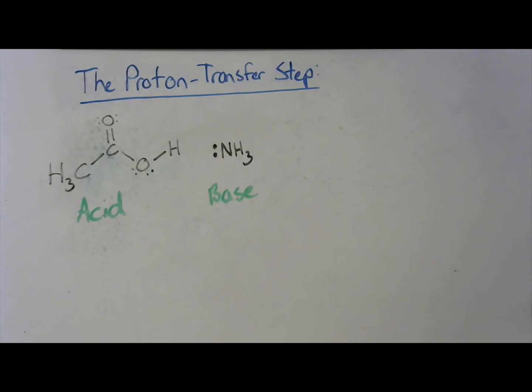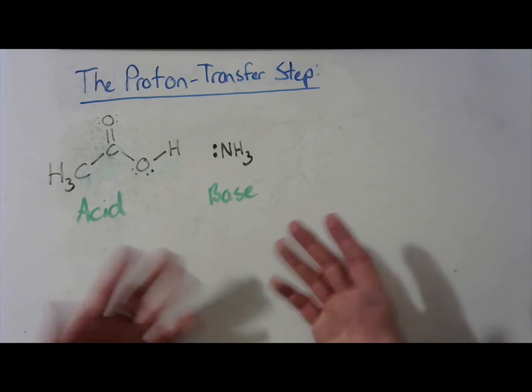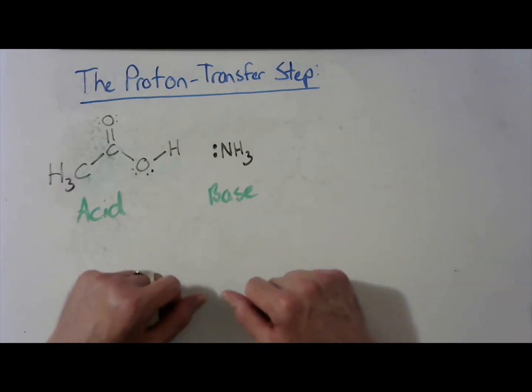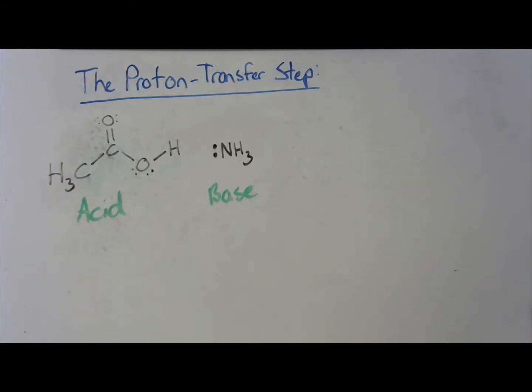Another very common, another very commonly acidic functional group are things like alcohols, or a little bit more obviously, hydrogens that are attached to halogens. Halogens being things like fluorine, chlorine, bromine, and the like.